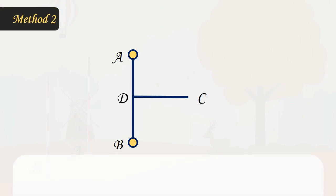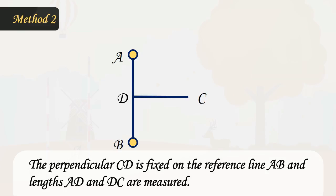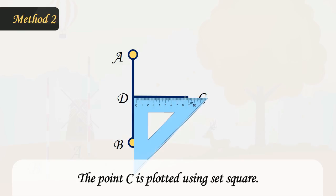Method 2: The perpendicular CD is fixed on the reference line AB and lengths AD and DC are measured. The point C is plotted using a set square.